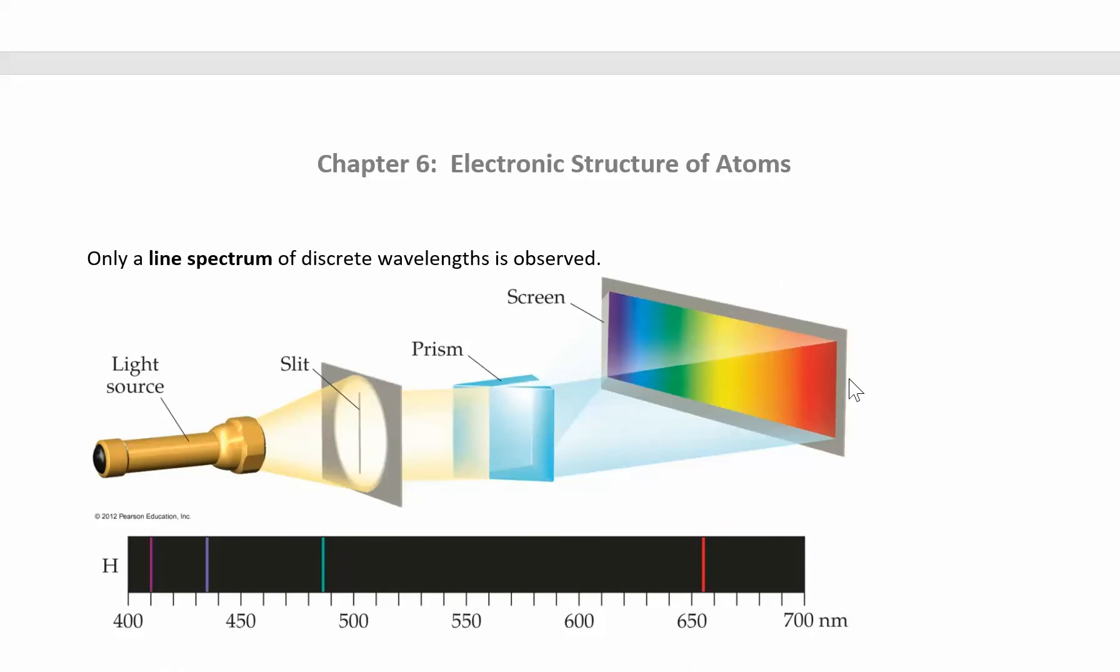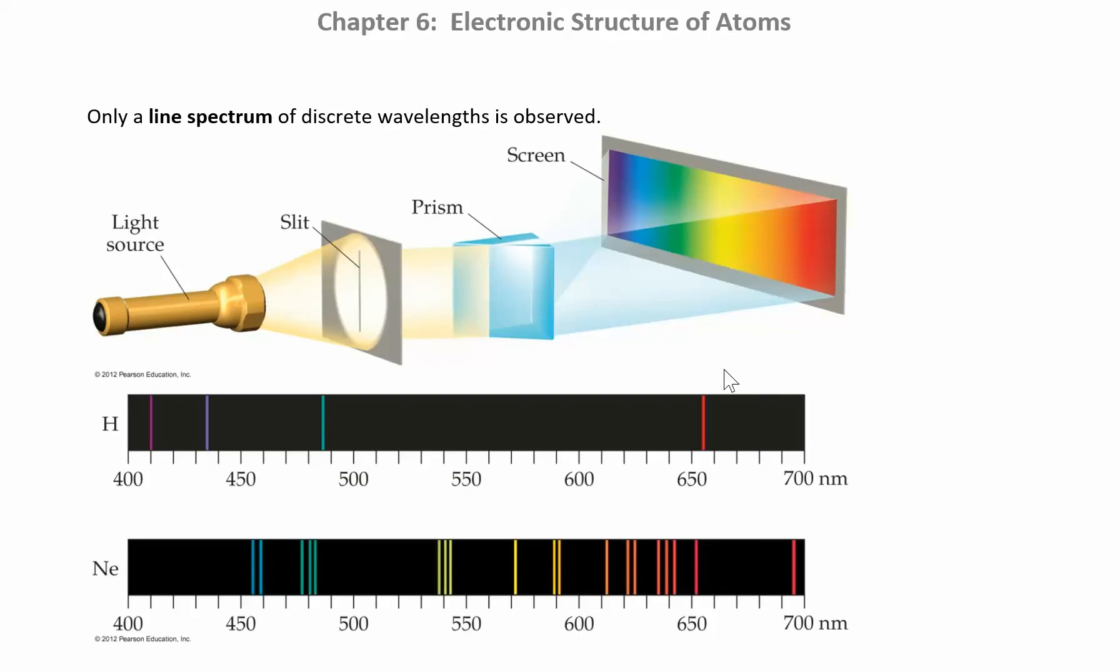It's a continuous spectrum of all the colors. If you do something similar to atoms or elements, you give them a certain amount of energy, you only see certain chunks come out because they only absorb certain chunks because energy is quantized and the atoms themselves can only absorb certain amounts of energy.